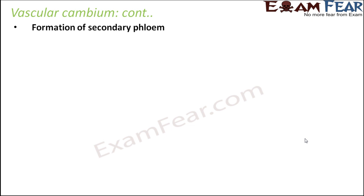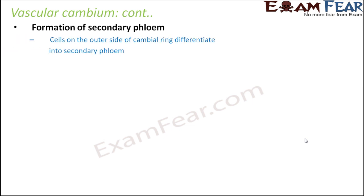This ring of cambium, being meristematic in nature, can form new cells on both sides — on the outer side as well as on the inner side. This results in the formation of secondary phloem and secondary xylem. When the cambium forms new cells on the outer side, that side faces phloem, so those new cells give rise to secondary phloem.